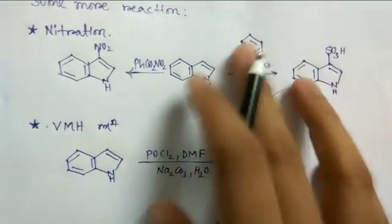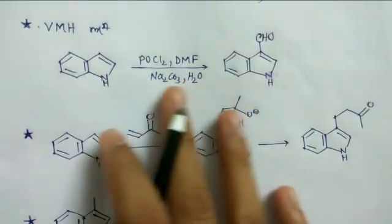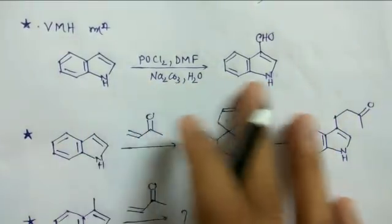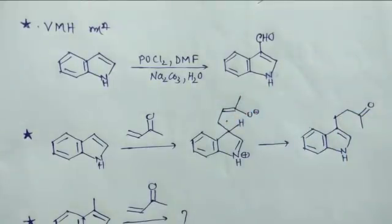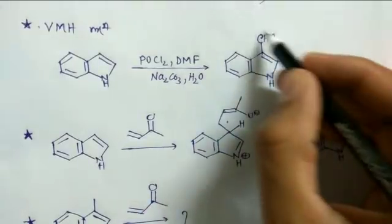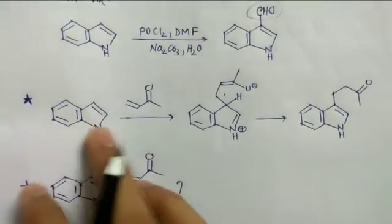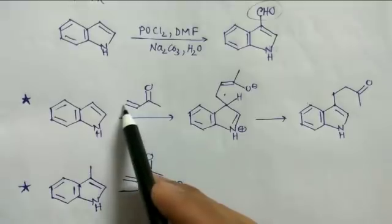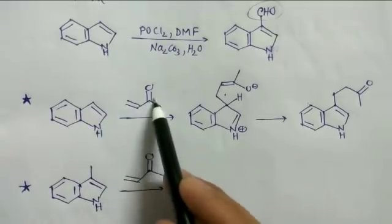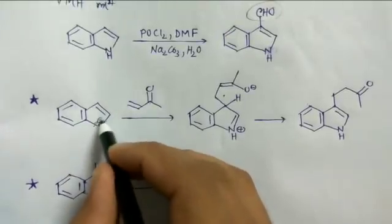Nitration and sulfonation of indole are straightforward — the same reagents used for phenols apply here and have already been discussed. The Vilsmeier–Haack reaction also occurs for indole and is important for introducing a CHO group, since the Mannich reaction has some difficulties in this context.